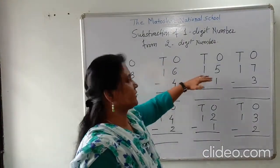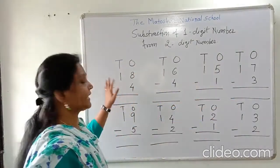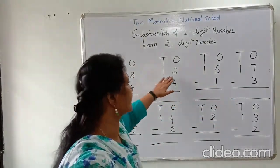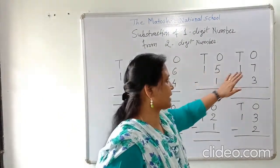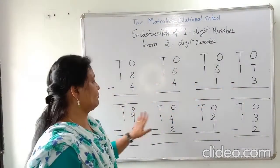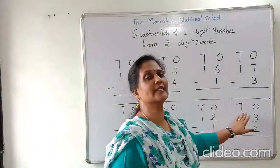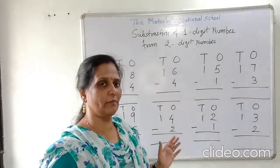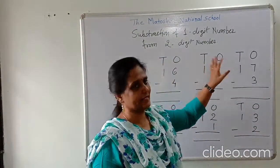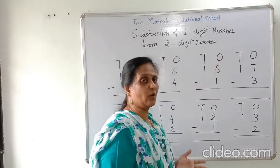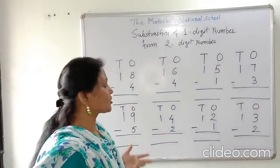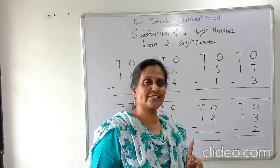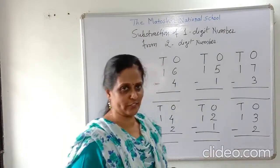Here are two digit numbers I have written on the board in tens and ones place: 18, 16, 15, 17, 19, 14, 12 and 13. These two digit numbers I write in tens and ones place. Now we have to subtract a one digit number from each two digit number.